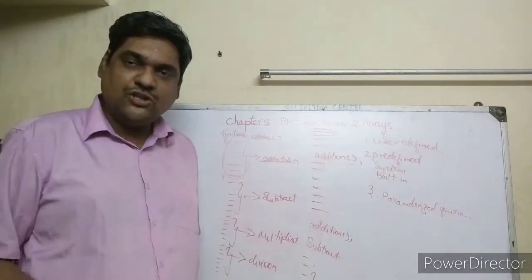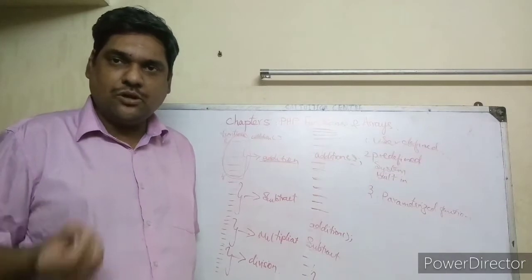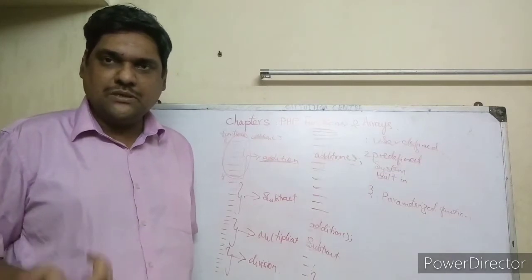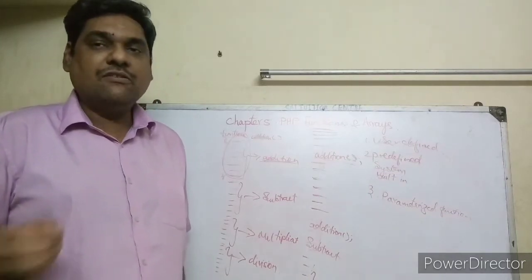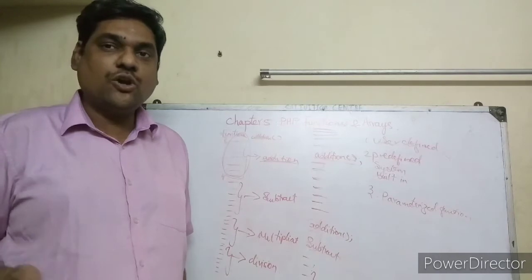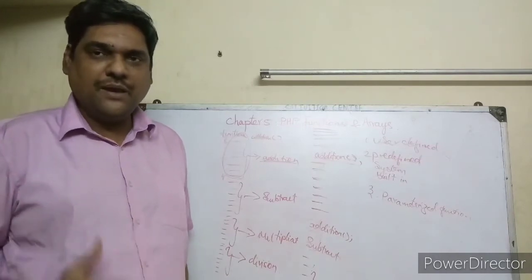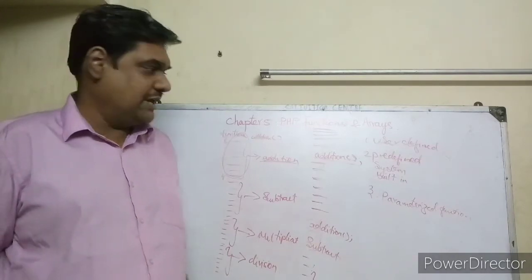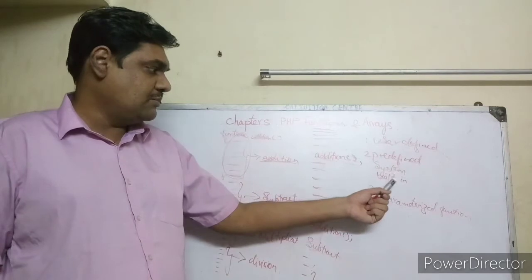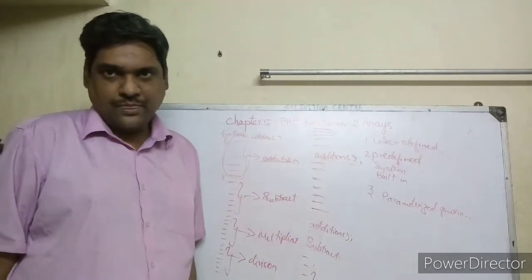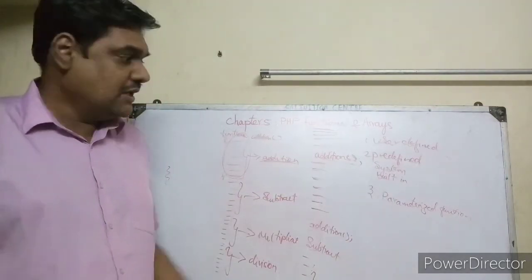The functions which are written by the users or the programmers are called user-defined functions. The functions which are already written and available in PHP are called predefined, system, or built-in functions. That is the difference.